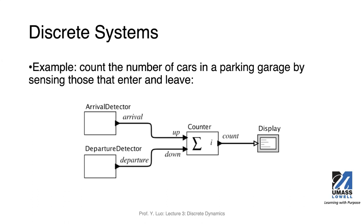Several important elements are visible here. We call these actors: arrival detector, departure detector, and counter. We see signals — arrival, departure — and the ports 'up' and 'down' going into some of the actors. The counter actor also has an output, which displays the number of cars currently in the garage and that is sent to a display.